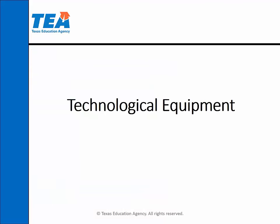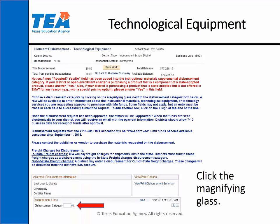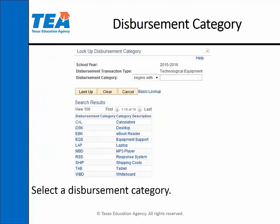We will go through a technological equipment disbursement field by field. Click on the magnifying glass to choose a disbursement category, then select a disbursement category.